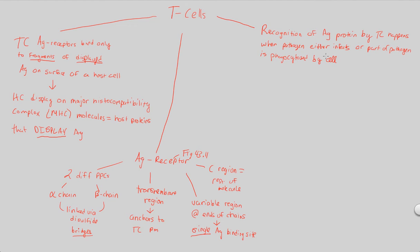Once a cell phagocytoses and eats a pathogen, what happens in order for a T-cell to recognize that a pathogen was just consumed? Cellular enzymes within the host cell are going to cleave the antigen that was just consumed. The pathogen breaks down into an antigen, and that antigen gets broken down even more because it's still too big to display. We use our own cellular host enzymes to cleave the antigen into smaller peptides.